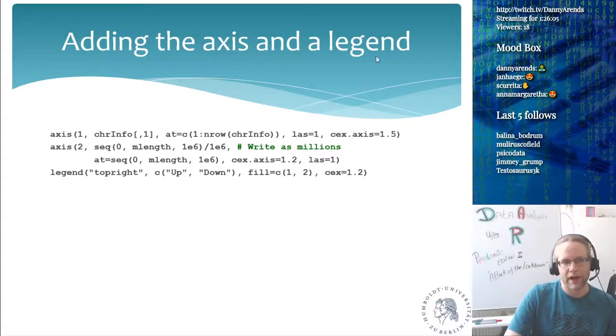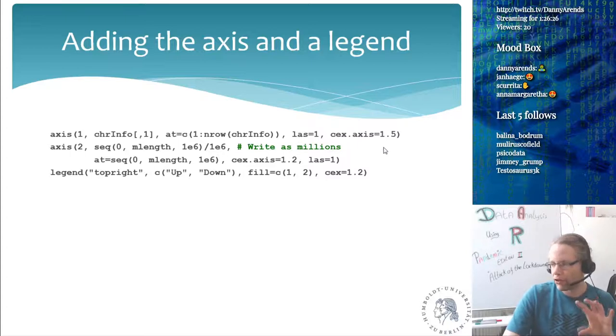Of course, I want to add the axis and a legend, so I'm just going to say, put axis on 1. So at each position, so take the names of chromosome info, which is 1, 2, 3, 4, but also x, y, and z, and put these at 1 to the number. So at 1 to 21, in our case. LES is 1, CEX is 1.5, so that they show up a little bit bigger, and the LES is so that they get rotated in the right position.